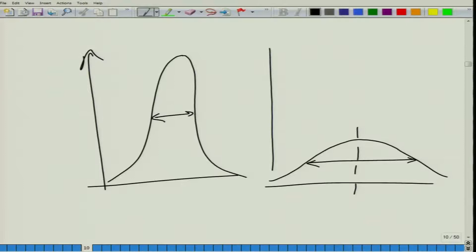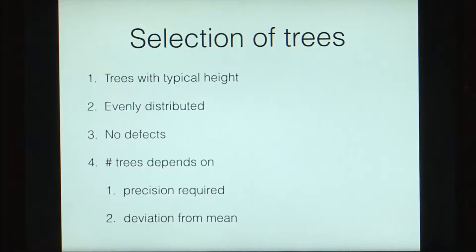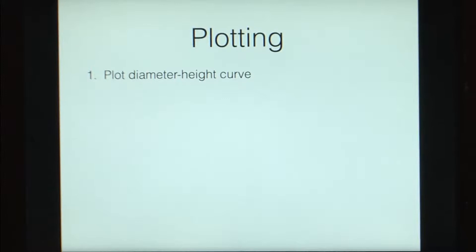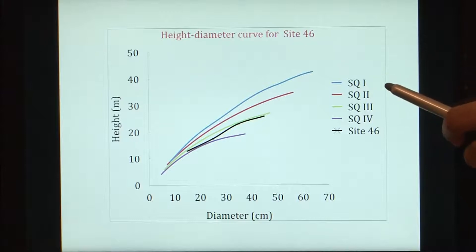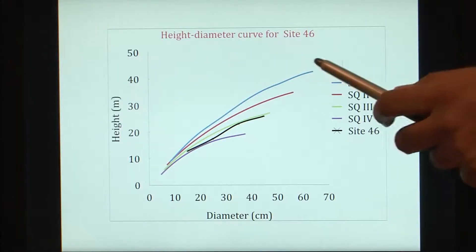Once we have selected those typical trees, we will measure the diameters and heights, then plot a diameter versus height curve. Here we have plotted some typical values for the case of sal, for different site qualities 1, 2, 3, and 4. If you consider any particular diameter, say 40 centimeters, site quality 4 will give you a height of around 33 meters, whereas site quality 1 will give a very small height.